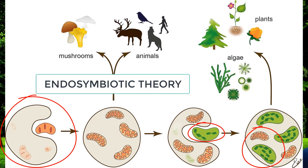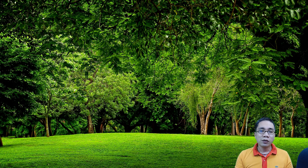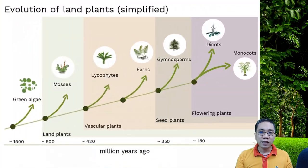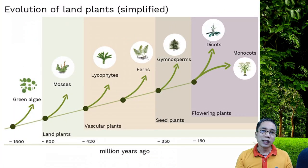Now, there are plenty of assumptions and so-called evidences to support this theory. So, just Google them. Therefore, plants started as prokaryotes with chloroplasts.